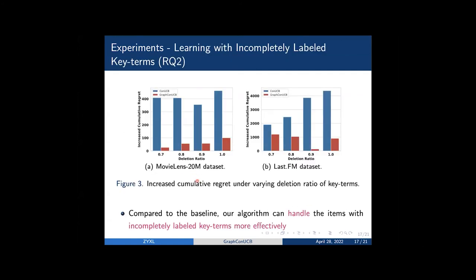To answer the second research question, we delete some parts of the key terms which are frequently used by specific agents to mimic datasets with incompletely labeled key terms. We can observe that our algorithm may suffer roughly more regret as the deletion ratio of key terms increased. However, the increased cumulative regret of our algorithm is significantly less than the baseline convUCB, which indicates that our algorithm can handle items with incompletely labeled key terms more effectively.